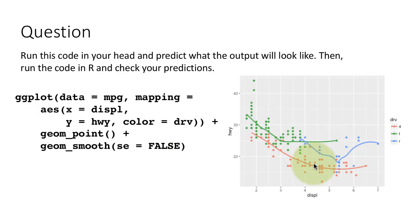No band because se equals false. Three lines because color equals drive. It applies to both geom_point and geom_smooth because we defined it at the level of ggplot itself. So it carries for both of them. And therefore, the lines are colored differently and the points are colored depending upon the drive. And se equals false says no confidence limits.